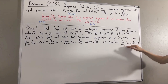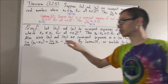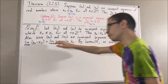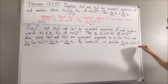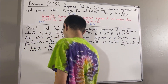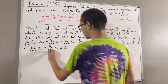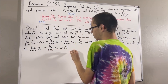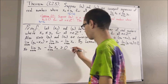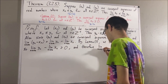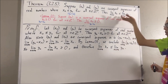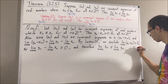But the limit of yn minus xn is equal to the limit of yn minus the limit of xn. So really, the limit of yn minus the limit of xn is greater than or equal to zero. And then, adding the limit of xn to the other side, we get that the limit of xn is less than or equal to the limit of yn. And that is exactly what we wanted to prove. So this completes the proof.